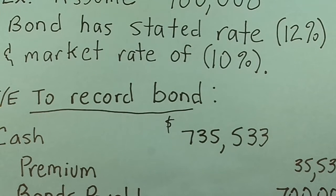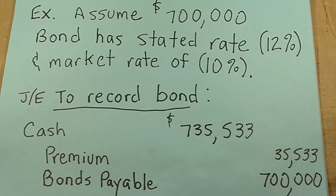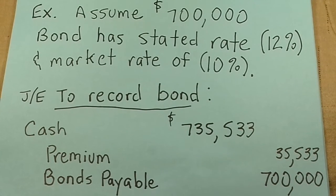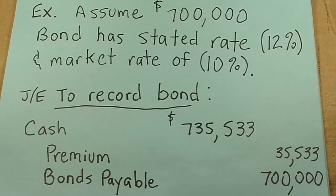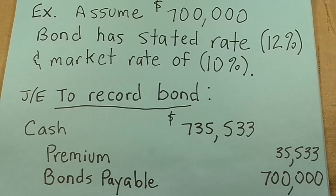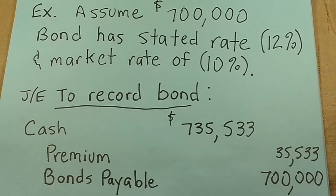Here's an example. Assume that we have a $700,000 bond — we're going out and trying to borrow $700,000. The bond has a rate on it of 12%, but today the market rate is only 10%. So we might be able to receive cash of $735,533, and that's our debit. But the liability — the amount we have to repay — is only $700,000. Therefore the difference is what we call an adjunct liability: premium on bonds payable, and that amount is $35,533.